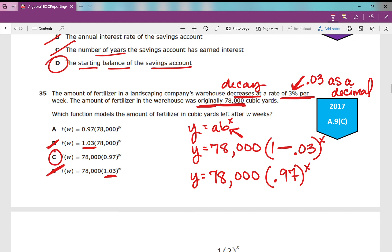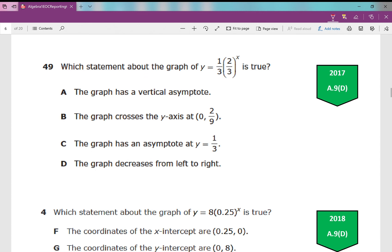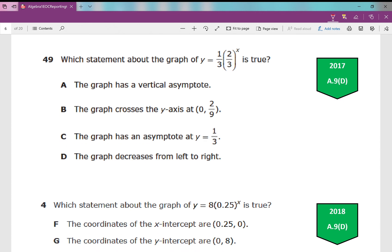Moving on, last one for this 2017 version. Which statement about the graph of y equals one-third times two-thirds to the power of x is true? The graph has a vertical asymptote? Nope, it has a horizontal asymptote. The graph crosses the y-axis at 0.09? Nope, there's my y-intercept, my starting amount—that's my y-intercept. So if that said 0.13, that would be correct. The graph has an asymptote at y equals one-third? Nope. The graph decreases from left to right? Absolutely. This number right here, this b value, is less than one. That shows exponential decay, which means it will decrease from left to right. D is your correct answer. And that concludes reporting category number five, 2017 version.